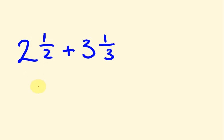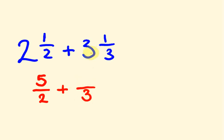First off, we put the bottom number as the same number. Then to get the top number, we take the whole number, times it by the bottom number and then add it to the top number. So two times two is four, plus one is five. We've turned it into an improper fraction. We keep the plus and do the same thing over here — keep the bottom number the same, then three times three plus one equals ten.